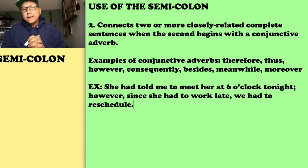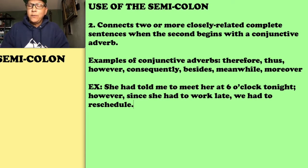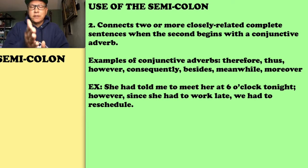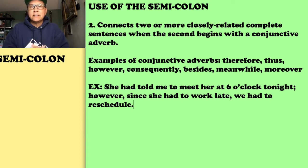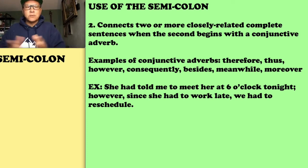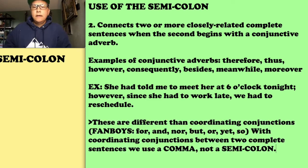Here's an example: 'She had told me to meet her at six o'clock tonight; however, since she had to work late, we had to reschedule.' The conjunctive adverb doesn't have to be there — you could just connect the two complete sentences with a semicolon — but the conjunctive adverb creates a connective thought. It's like saying 'this happened, therefore / however, this is what occurred after.'